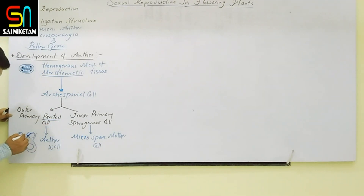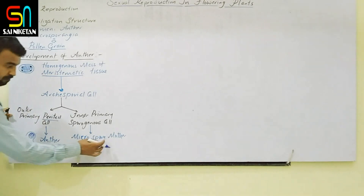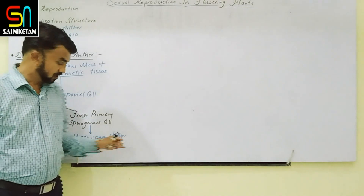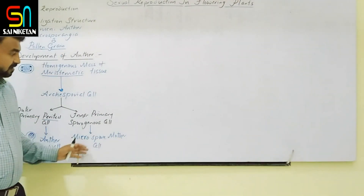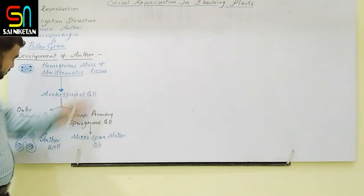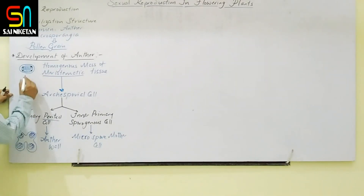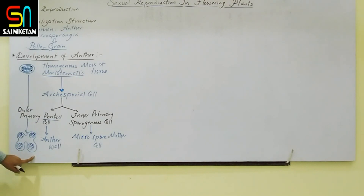Inside the anther wall is the microsporangium, and inside that are the microspore mother cells. The fate of the microspore mother cell is the next topic. This completes the development of the anther. After this process, the anther is fully formed.